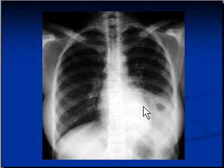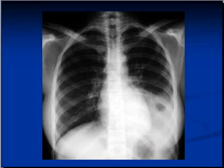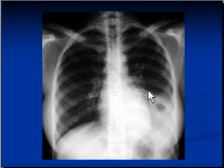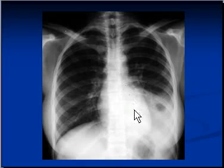Another X-ray shows consolidation in the left lower zone, but the left cardiac border is still clearly visible. This indicates that the pathology is most probably in the lower lobe, which lies posteriorly. Since the normal lung tissue of the left superior lobe is bordering the left heart border, that border remains clearly visible. The heart is located anteriorly, and the tissue bordering the heart still has air in it.